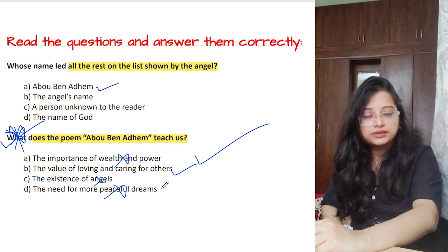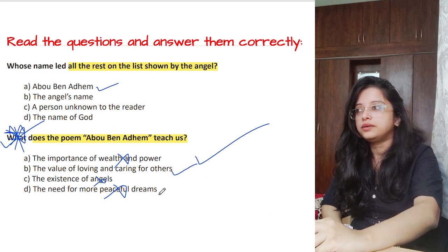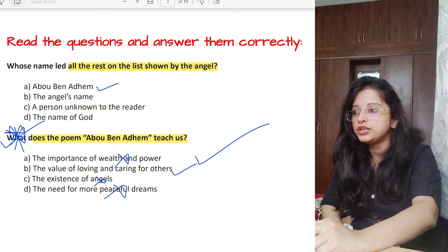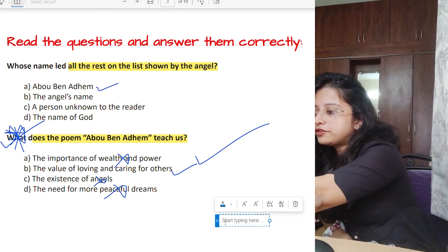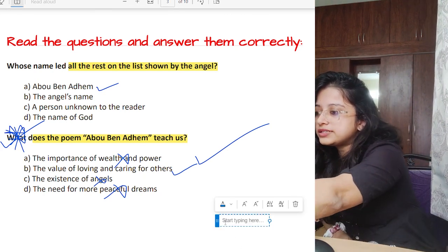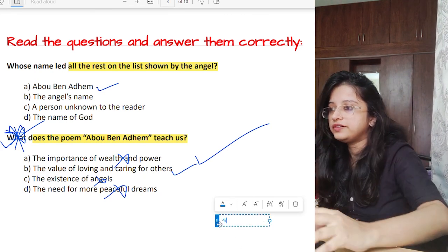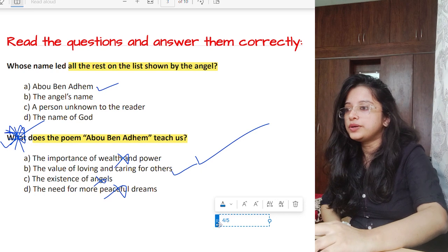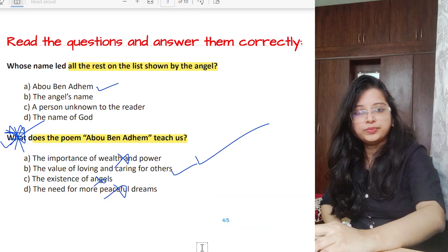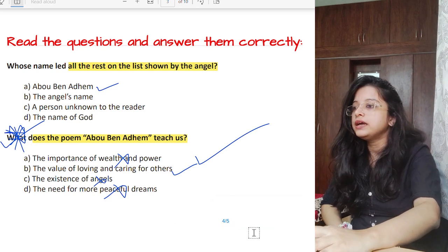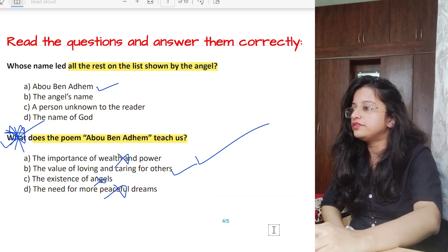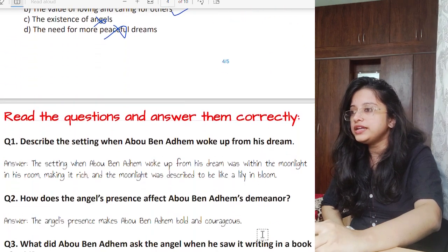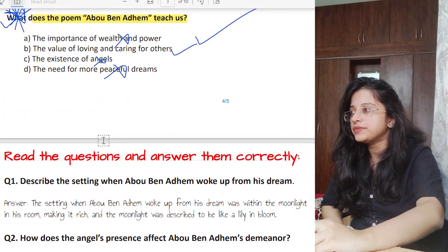You can write your MCQ score in the comment section — for example, write '4 out of 5' or '5 out of 5' and send it to me. Now let us move to the next part — subjective questions. Read the questions and answer them correctly.